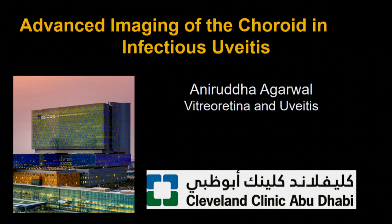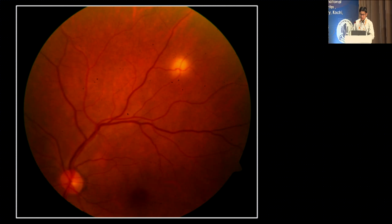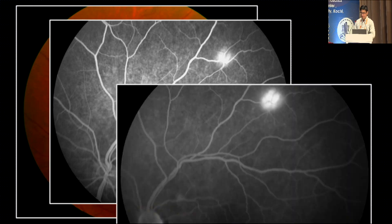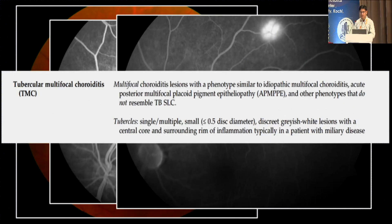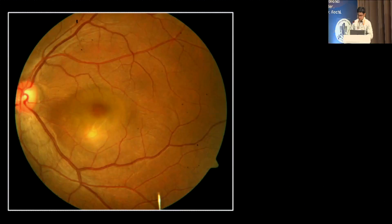Good morning and thank you for this opportunity. I'll talk briefly about imaging of the choroid in non-infectious uveitis and how we can use OCT angiography to diagnose several diseases. If you have a patient with a yellow lesion in the periphery, sometimes the diagnosis is straightforward — a patient with disseminated tuberculosis doesn't need multiple imaging; a fundus photograph and fluorescein are sufficient. A choroidal tubercle appears as a gray-white lesion with a central core, typically seen in patients with miliary disease. But multifocal choroiditis can be confusing — different phenotypes such as MPE, multifocal choroiditis, or those not resembling tubercular choroiditis.